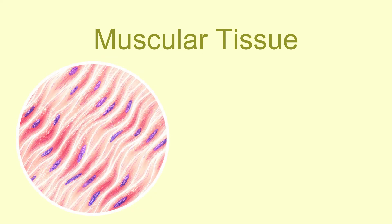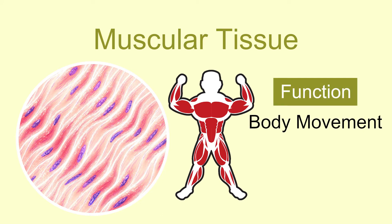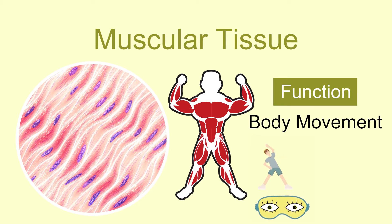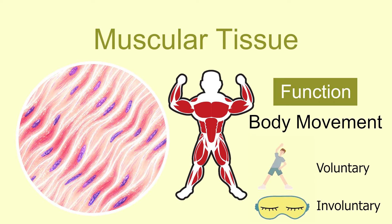Muscular tissues are made up of muscle cells which contract and relax, thus causing body movement. If the muscle's movement can be controlled at will, it is classified as voluntary, like stretching of arms. Otherwise, it is called involuntary, like eye blinking.